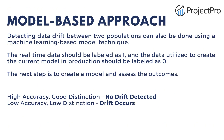The other type of approach is the model-based approach. This method is used to detect data drift between two populations using a machine learning model. In this method, we label real-time data as one and the data used to create the model as zero. When the model assesses the outcomes, it gives results based on accuracy. If accuracy is high, we can say there is no drift. But if accuracy is low, we can say that drift has happened in the data.